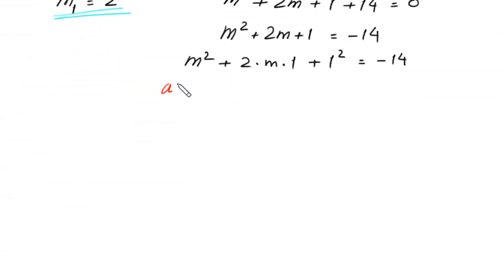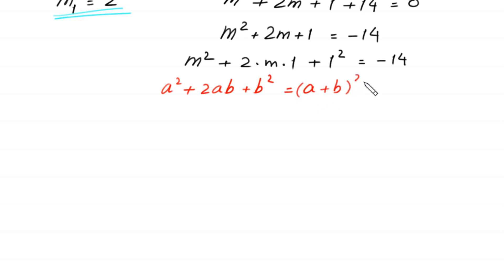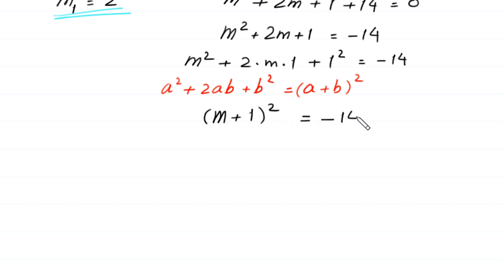Using the algebraic identity a squared plus 2ab plus b squared equals (a plus b) whole squared, this expression m squared plus 2 times m times 1 plus 1 squared equals (m plus 1) squared, which equals negative 14.